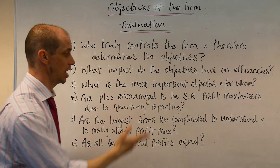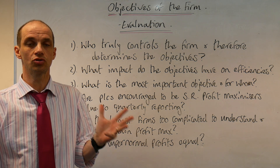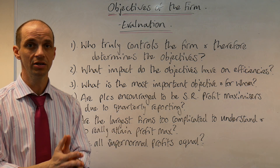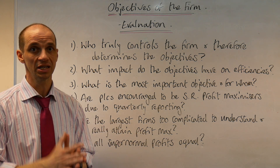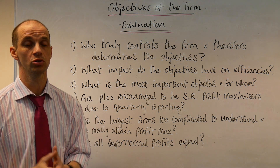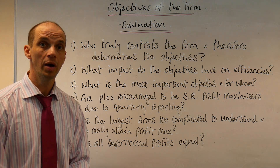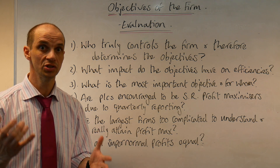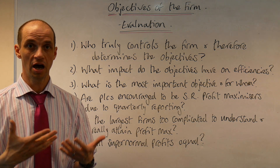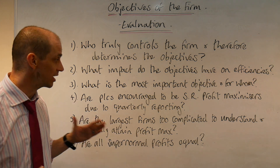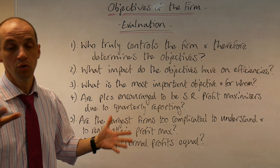Number five: are the largest firms too complicated to understand to really attain profit maximization? Are their cost structures so incredibly difficult to understand, so multiple in terms of scale, that it's just too complex to actually pursue profit maximization? Perhaps one of the best examples, with regard to a more dynamic pricing mechanism, is Uber and the way they use price discrimination — determined by how many people are opening up the Uber app at a given time. The more people opening that app tells Uber there is more demand for taxis in a given area, giving them information on whether to increase or lower the price.